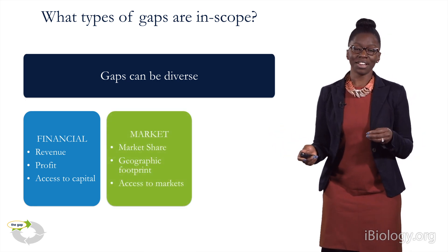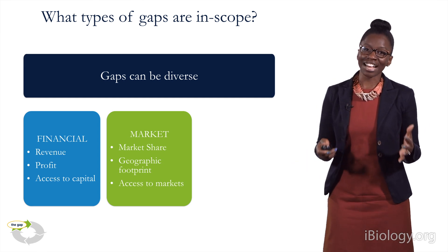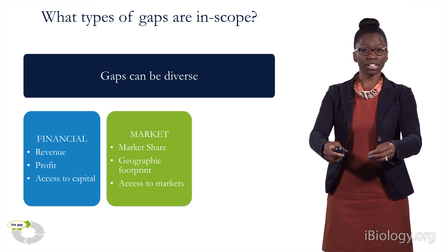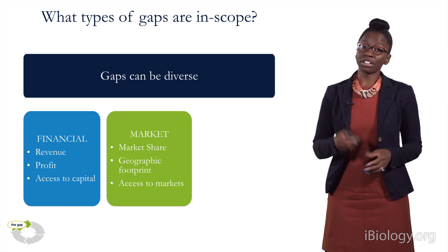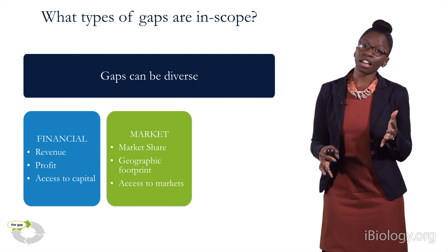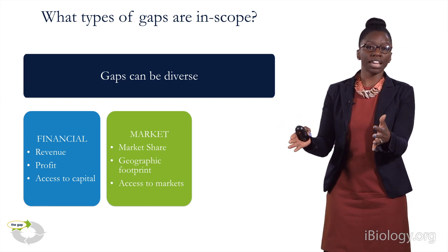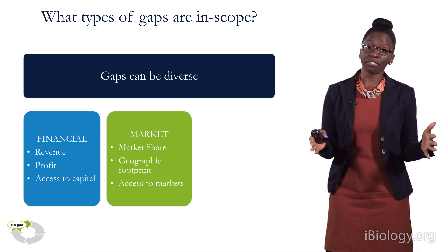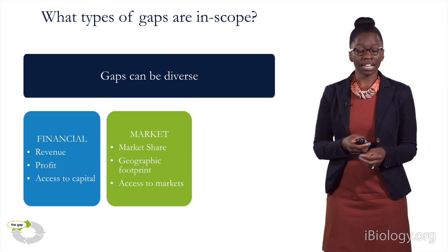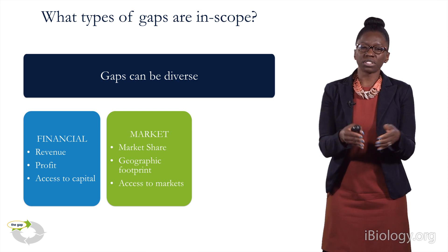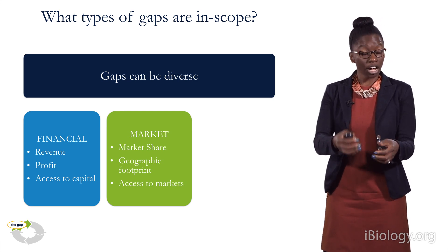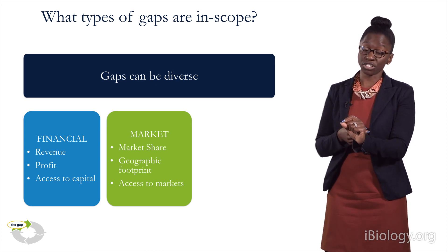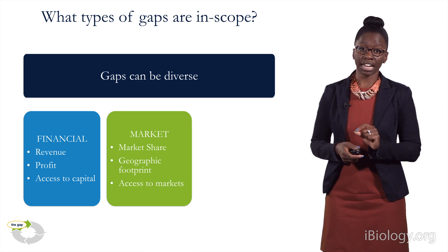There could also be market gaps. You have an amazing product, but maybe the market hasn't really understood that yet. Perhaps you have a market share gap — you're not getting as much penetration as you want out of the marketplace. Maybe you have a geographic footprint misalignment: you think that your product should be huge in North America, but it's really only huge in China and maybe Europe. That would be a geographic footprint gap. And then there's access to markets — maybe you're looking for positions that have a huge uptake of your product, and that's not happening, whether stakeholder or geographic.